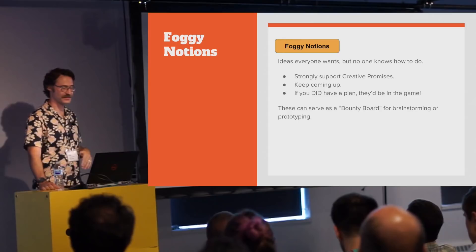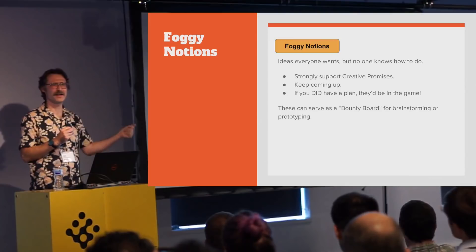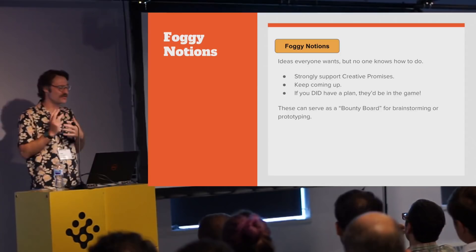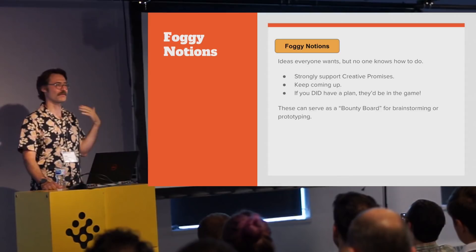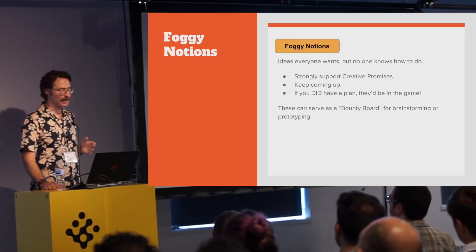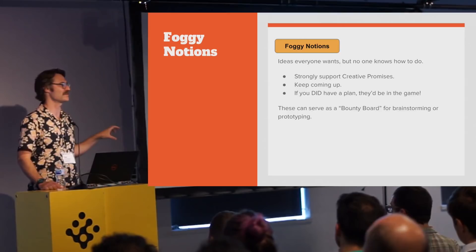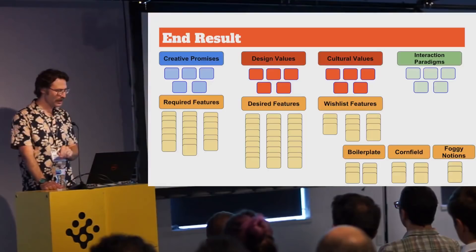The last category is foggy notions — a recent addition for Psychonauts 2. The Big Board puts such a premium on concrete and actionable ideas, but sometimes something embedded in a creative promise keeps coming up and people want it, yet you have no idea how to do it. It can't really live as a feature because those are things you have a plan for. On Psychonauts 2 every time we talk about being a psychic, people say 'I want fortune telling' — we don't know how to do that right now, but if we come up with a way, it should totally go in the game. Foggy notions serve as a bounty board for good ideas you just don't know how to execute yet.